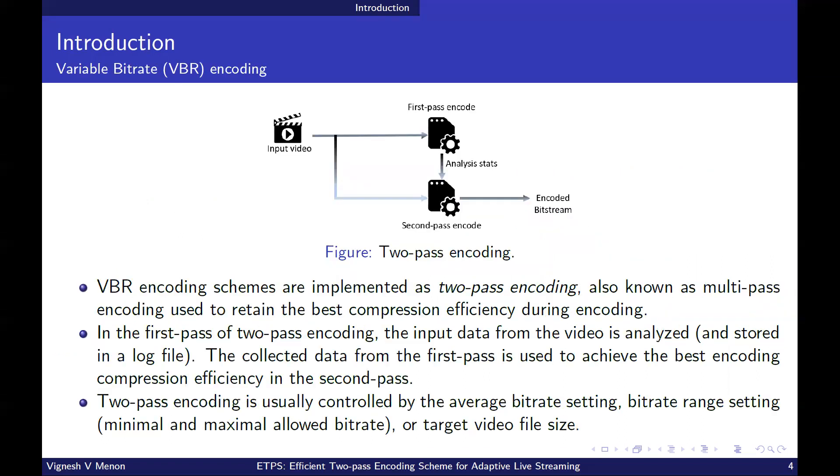In contrast, VOD applications use variable bitrate VBR, where the video segments are encoded by their complexity to optimize the transmission at the cost of adding a preprocessing step. VBR encoding schemes are implemented as two-pass encoding, also known as multi-pass encoding, which are used to retain the best compression efficiency during encoding. As shown in figure, in the first pass of two-pass encoding, the input data from the video is analyzed and stored in a log file. The collected data from the first pass is used to achieve the best encoding compression efficiency in the second pass. In video encoding, two-pass encoding is usually controlled by the average bitrate setting, bitrate range setting, or target video file size.